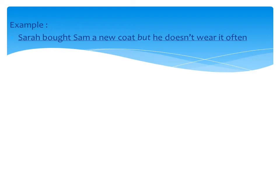For example: 'Sarah both sent a new code' — that is sentence one. The conjunction joins it to 'he doesn't wear it' — that is sentence two. Next, Kak Fushima will present. Thank you.